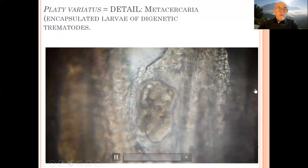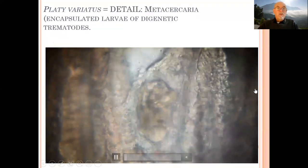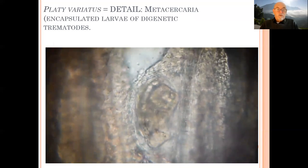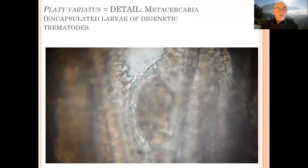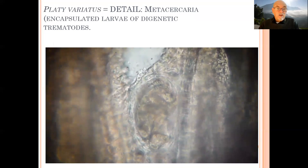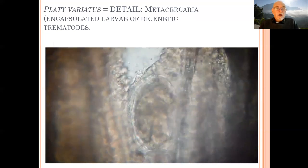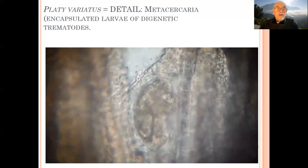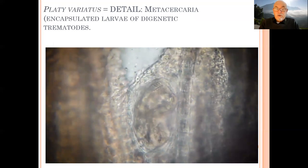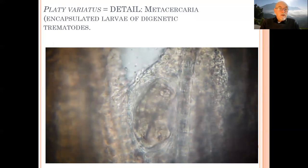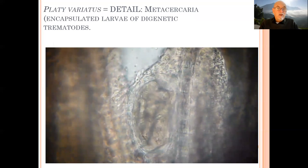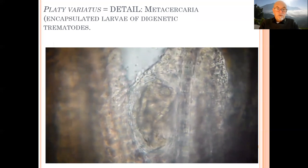Here we show in detail the worms — a larva that for a certain time is alive and moving. When this larva is eventually eaten by a big predator, a bird, another fish, or a mammal, it will eventually develop into a larger worm, an adult digenetic trematode.